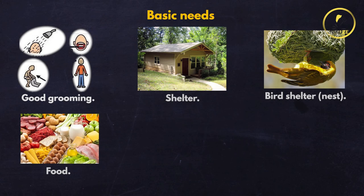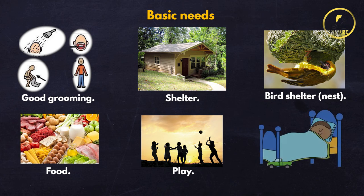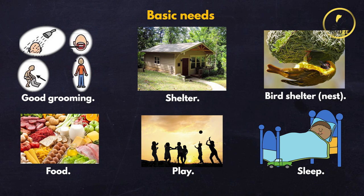Our next basic need is play, and finally we have sleep. As much as we eat and carry out our daily activities, we should ensure that we have enough play, as it helps with child growth and development. We should also ensure that a child sleeps for at least six to eight hours for proper growth. If we balance all of these, we ensure proper development.